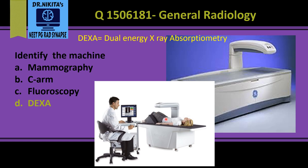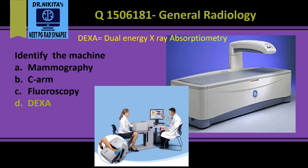We also have a peripheral DEXA machine, which is a portable machine you may have seen in many hospitals. In this portable peripheral DEXA machine, you can either place the foot, the hand, or the wrist into it, and it calculates the bone mineral density in these areas, again giving a curve of T-score and Z-score.